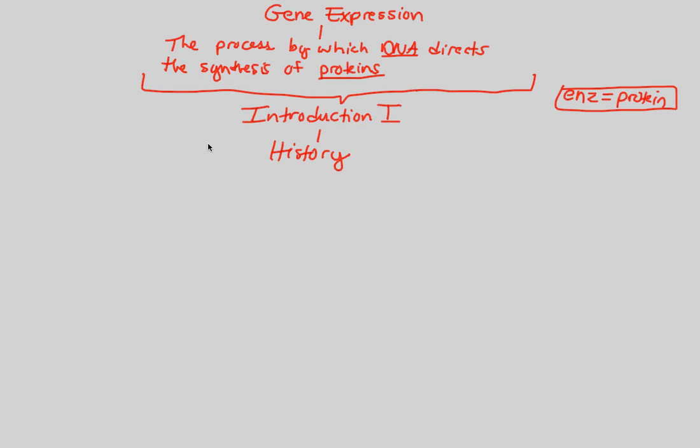So the first person that we want to talk about is a man by the name of, and we'll do this right over here, his name was Sir Archibald Garrod. And his studies and research was done in about 1902. So over a hundred years ago, he came up with this incredible idea. And let's look at it. He was a scientist who studied inherited diseases.